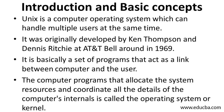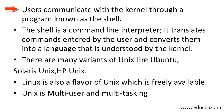So to summarize: Unix is an operating system, it handles multiple users, it handles multitasking. Users communicate with the kernel through a program known as the shell. For us — the users — to communicate with the operating system, we have a compiler called the shell. The shell is a command line interpreter. What is an interpreter? It is a translation software. It translates commands entered by the user and converts them into a language that is understood by the kernel.